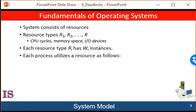Under normal mode of operation, a thread may utilize a resource only in the following sequence. First, request: a thread requests a resource. If the request cannot be granted immediately — as in the case of a mutex lock that's currently being held by another thread — then the requesting thread must wait until it can acquire the resource. Next, use: the thread can operate on the resource. For example, if the resource is a mutex lock, the thread can access its critical section. And then release: the thread releases the resource.